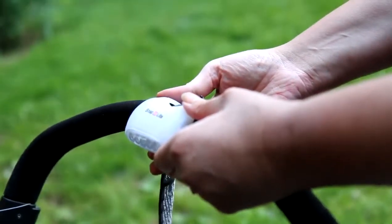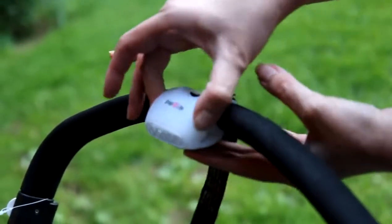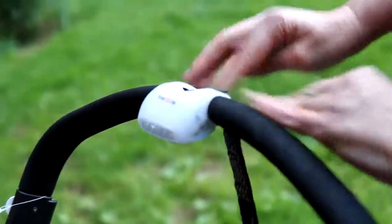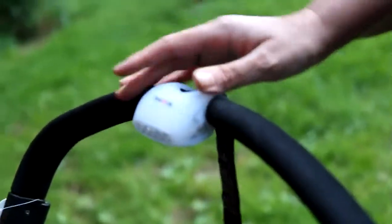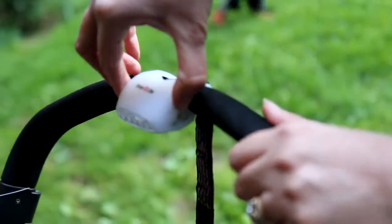infant carrier, ride-on toys, bikes, or trailers. It won't damage any of your equipment because of this nice silicone. It has three different functions so that you're seen at night.